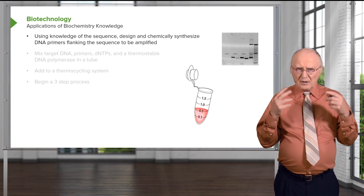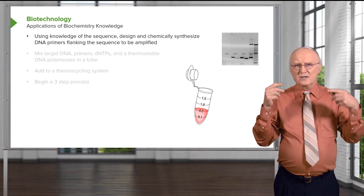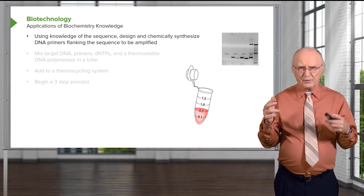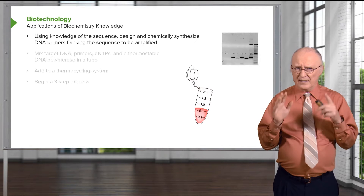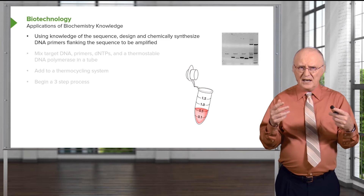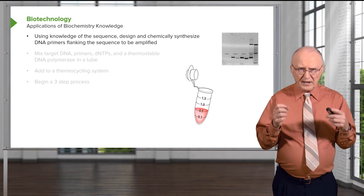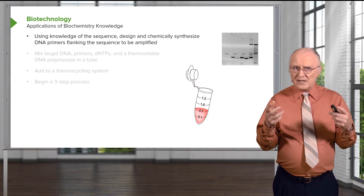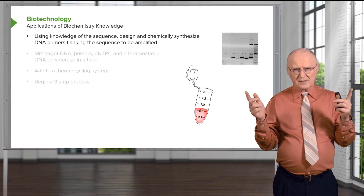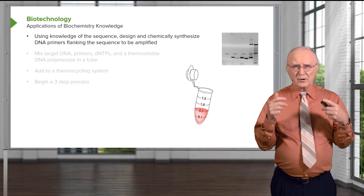The PCR technique uses the knowledge of the sequence to design and chemically synthesize DNA primers flanking the region to be amplified. In a previous lecture, I talked about how DNA polymerase uses a primer to start DNA replication, and in the cell that primer is RNA. The problem with an RNA primer is it has to be removed and then replaced by something else, and that's kind of a complicated process.